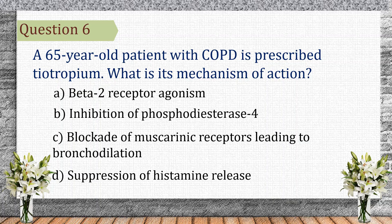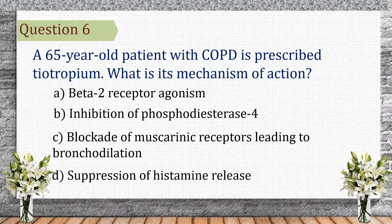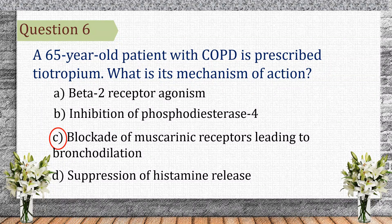Question 6. A 65-year-old patient with COPD is prescribed tiotropium. What is its mechanism of action? The correct answer is C: blockade of muscarinic receptors leading to bronchodilation. Tiotropium is a LAMA that inhibits muscarinic receptors (M3), reducing bronchoconstriction and improving airflow in COPD.